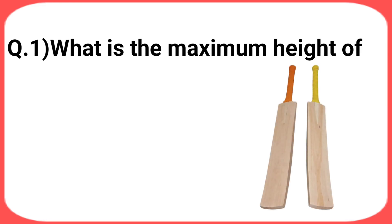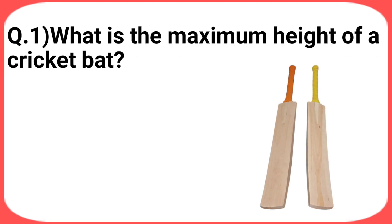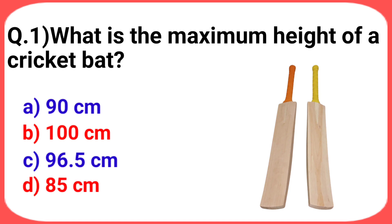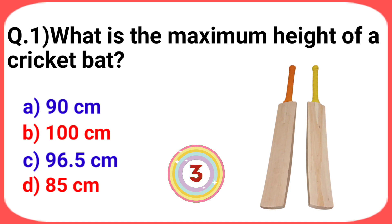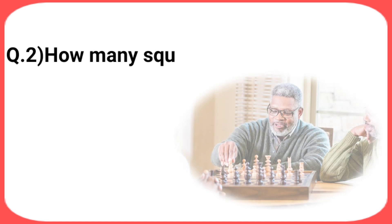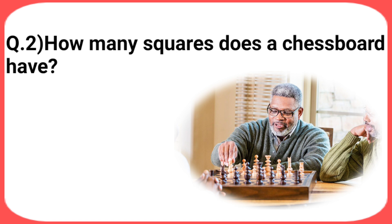First question: what is the maximum height of a cricket bat? Your options are: a) 90 cm, b) 100 cm, c) 96.5 cm, d) 85 cm. The answer is option c: 96.5 cm.